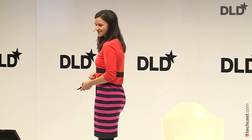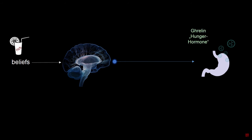Turns out the answer is yes — there is a difference. If you drank the one labeled 'rich,' you produced less of the hunger hormone ghrelin in your stomach. Think about this: a mere thought or assumption about what a substance does to us actually changes hormone production — not in your brain, but in your stomach.